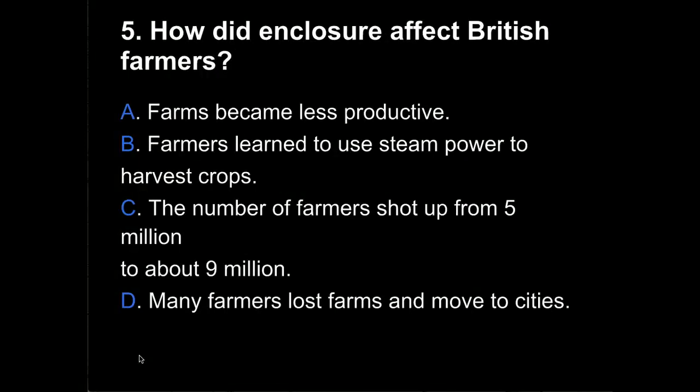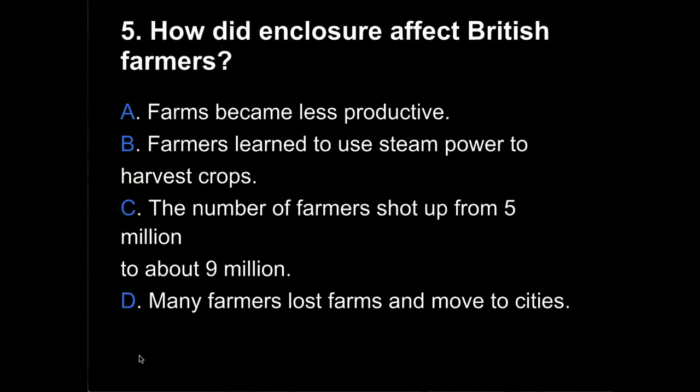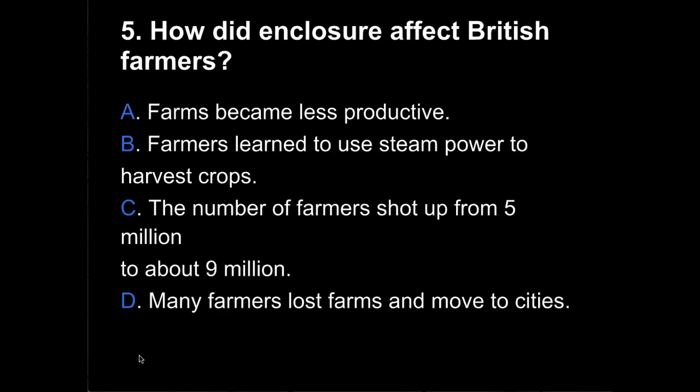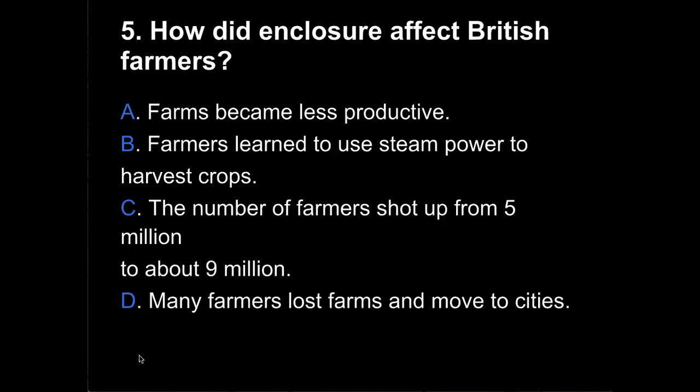Question 5. How did enclosure affect British farmers? Was it A, farms became less productive? B, farmers learned to use steam power to harvest crops? C, the number of farmers shot up from 5 million to about 9 million? Or D, many farmers lost farms and moved to cities?